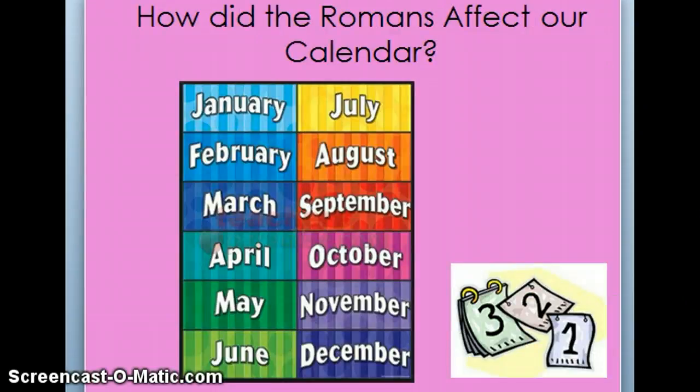The Romans also affected our calendar — the way we keep track of what's going on in our world. There are two months named after Roman rulers. Take a look at the names of the months and see if you can think of any that were named by Roman rulers.